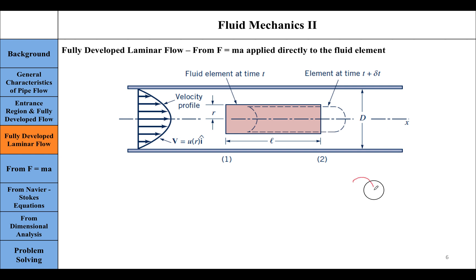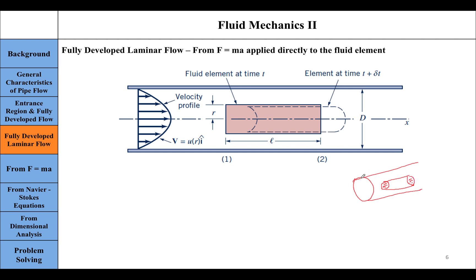We take an expanded 2D view of this horizontal pipe with diameter d and identify a fluid element within it. In actuality the pipe is cylindrical, and this fluid element is also a cylindrical fluid element with circular cross-sections on both sides. We are looking at this fluid element within the fully developed flow region, which means the velocity profile remains constant throughout — it looks the same anywhere within the pipe.